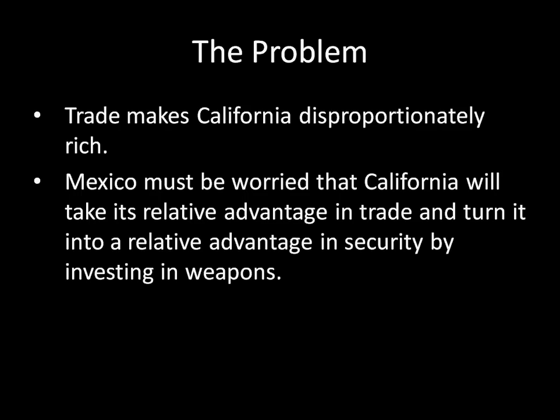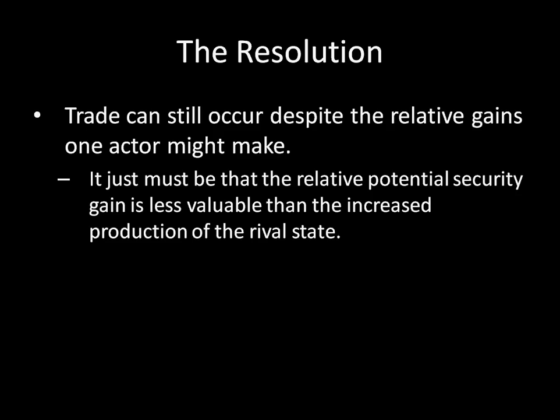This is not to say that trade becomes impossible when we have this sort of security issue. Trade is still possible — it's just that you have to be really careful about how you balance it. The way to balance it appropriately is to make sure that the relative gains potentially created by trade are offset by the absolute advantages of increased production. If you have an equitable distribution in trade, then you don't have to worry about the security relationship issue. It's only when you don't have equitable gains — when one side gains more than another — that such an agreement might not be acceptable to one state. You might have to force these sorts of trade agreements to be more equitable among security rivals.